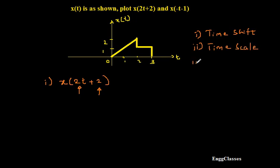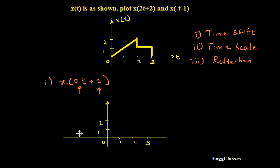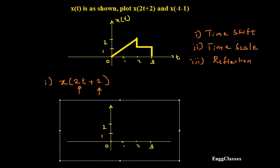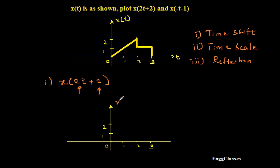Towards the end I have to do reflection if there is any. In this example x of 2t plus 2, there is no reflection involved — there is only time scale and time shift. So as per the precedence rule, I have to do time shift first and later time scale. Let me consider x axis and y axis. I will write this as x of t plus 2, because I have to do time shifting first, and later I will do time scaling on the shifted version.